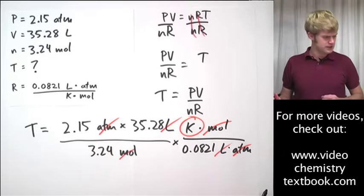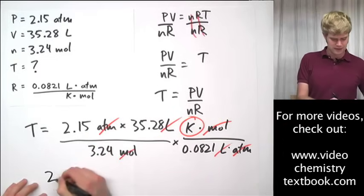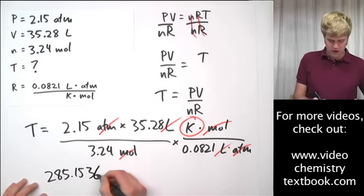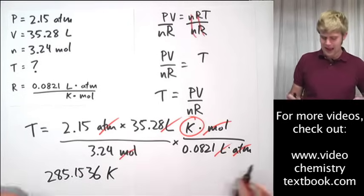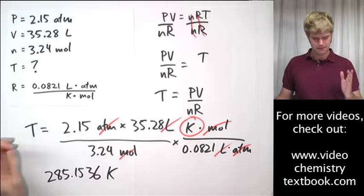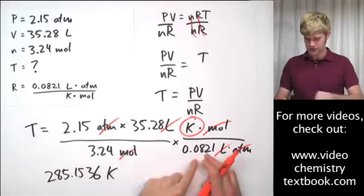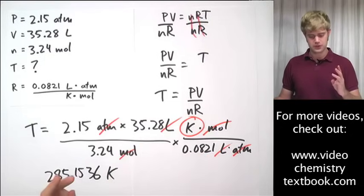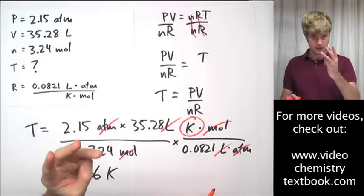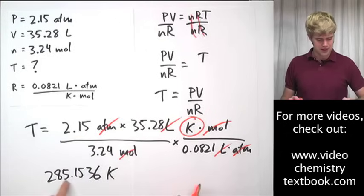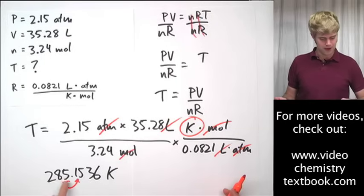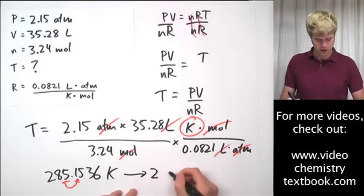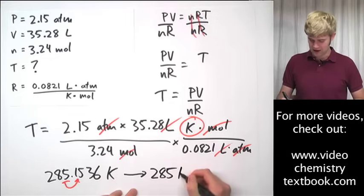Okay? So, I plug through all these numbers and the final answer that I'm going to get is 285.1536 Kelvin. How many digits do I round this to? Okay? Three significant figures for most of these. Four significant figures here. But I always have to go with the fewest. So, I'm going to round this to three significant figures. Keep the two. Keep the eight. Keep the five. And look next door to the one. Do I round it up? Keep it the same? I keep it the same. So, it's going to be 285 Kelvin.